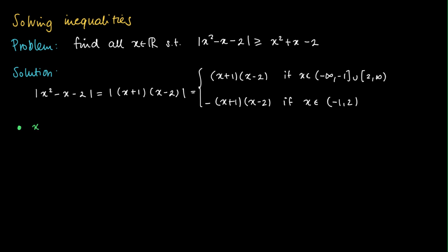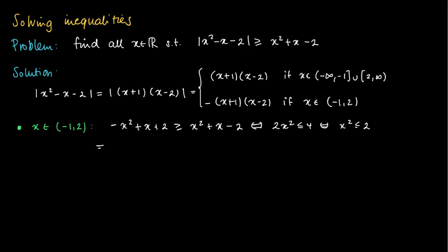Now we solve two different cases. The first case is where x is in the open interval minus 1, 2. Then we have a minus sign for the absolute value of the quadratic term, so minus x squared plus x plus 2 should be greater or equal than x squared plus x minus 2. This reduces to the easy quadratic inequality that 2x squared should be less or equal than 4, so x squared should be less or equal than 2, meaning x should be in the interval minus square root of 2 to square root of 2.